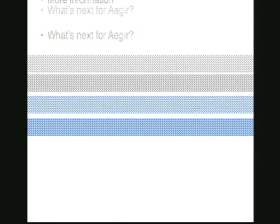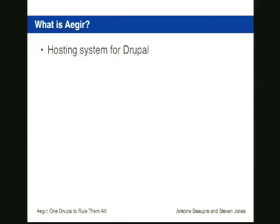Eiger is what we describe as a hosting system for Drupal — though technically it manages the hosting system rather than being the hosting system itself. The hosting system is still your web servers and database servers: Apache, Nginx, MySQL, or Postgres. Eiger manages those components for you, taking the hassle out of setting up your virtual hosts and that sort of thing.